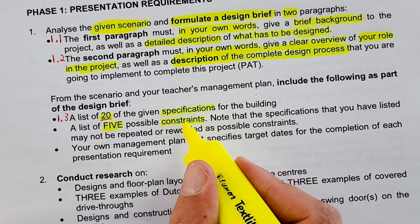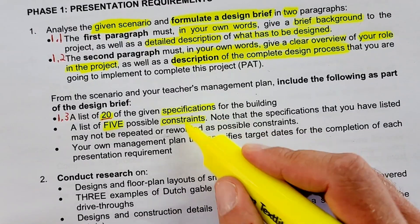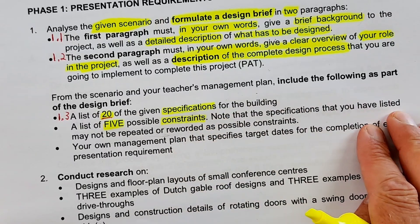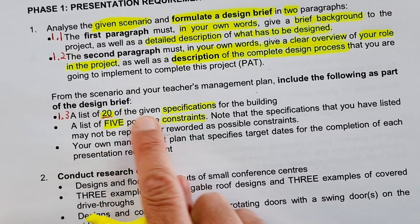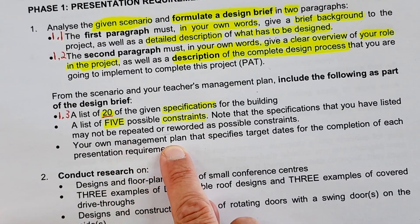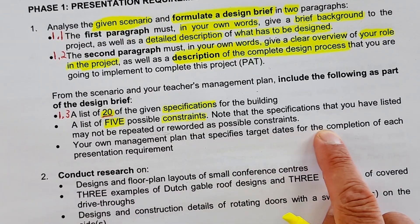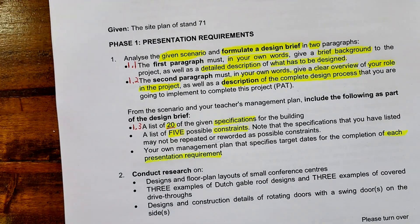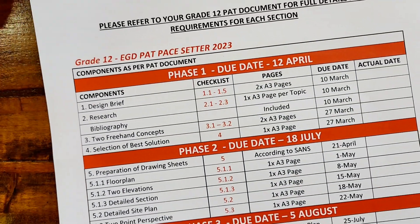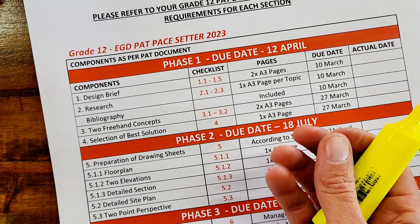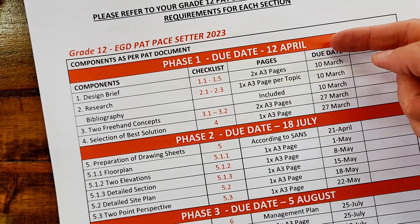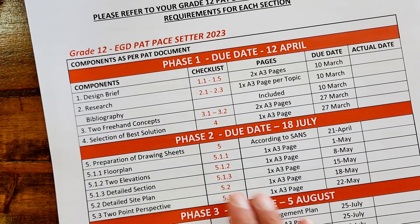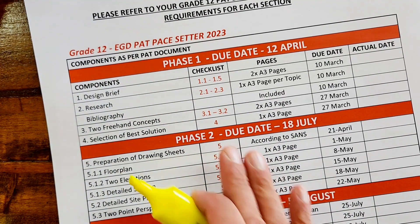You cannot write a specification in negative form to come up with a constraint. The tip is to come up with your constraints first, then list the remaining specifications to make up your 20. The last item is a management plan that specifies target dates for the completion of each presentation requirement — very similar to the pace-setter discussed in the previous video. Make sure you have a due date column and an actual date column, with all the different components that need to be completed.